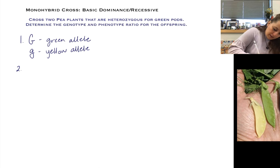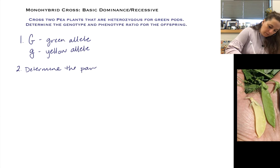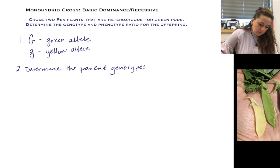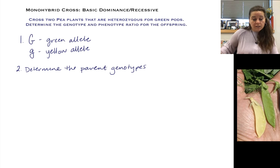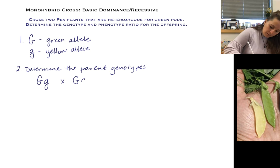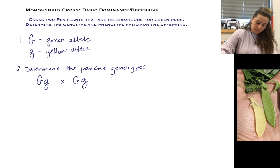Once I have my alleles assigned, the second step is to determine the parent genotypes. I pull that out of the problem — I'm told that the parents are heterozygous for green pods. Heterozygous means the genotype of each parent is not the same, so since there are only two alleles for this trait, each parent has one dominant allele and one recessive allele. So I write heterozygous for one parent, crossed with the other heterozygous parent, because the problem tells me they both are.